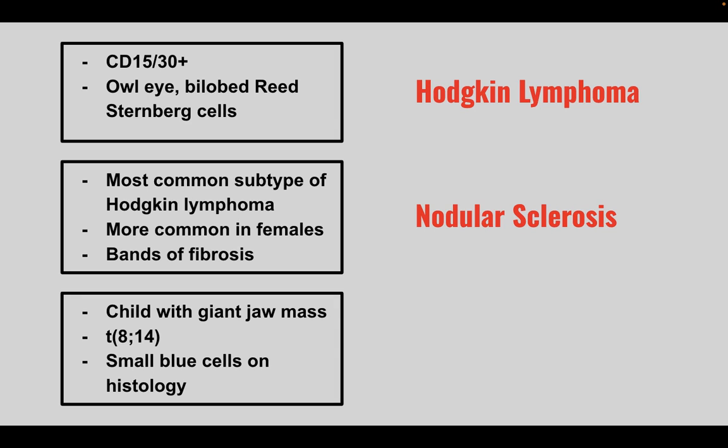Next is a child with a giant jaw mass, translocation 8;14, and small blue cells on histology. This is Burkitt's lymphoma. Remember, Burkitt's lymphoma is associated with the EBV virus.